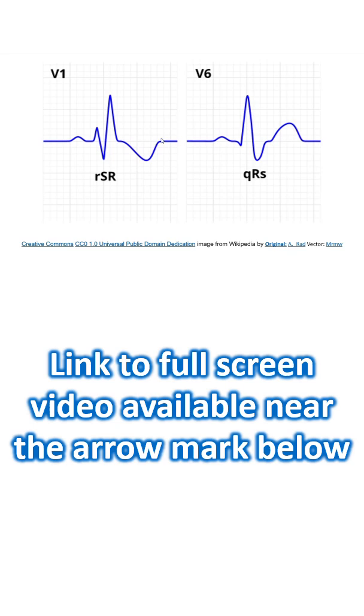This terminal r prime is due to delayed activation of the right ventricle. In V6, the corresponding features are a small initial q wave, tall R which is usually seen in V6, that is left ventricular forces. This is due to right ventricle delayed activation.